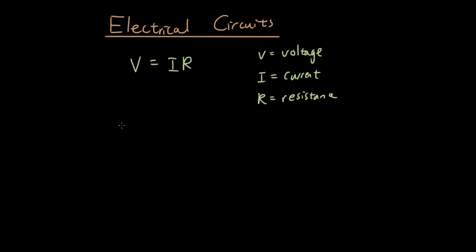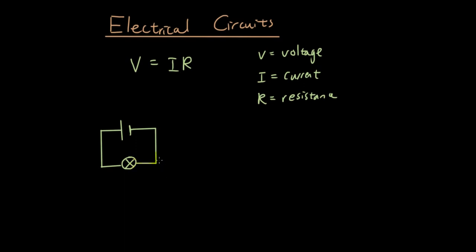So let's draw a normal circuit to start off. I have an electric circuit with a positive terminal and a negative terminal, and let's say I have a light bulb somewhere in the circuit. You always need at least one component in a circuit, otherwise you will create a short circuit in which either the battery or the wires will be set on fire. The reason for that we'll explain later, but you need something that consumes the energy given by the battery.